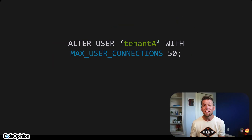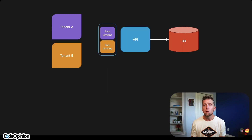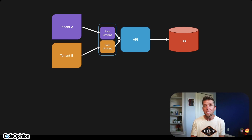One solution at the database level is having a database user per tenant. When you make that connection and you know who the tenant is, you specify the connection string using that specific user, which lets you limit the number of connections per tenant. Another solution further up the stack is rate limiting per tenant — whether through your load balancer or application middleware. Of course, this doesn't completely solve the noisy neighbor problem, because one tenant could still perform an egregious query that drains resources and affects other tenants.